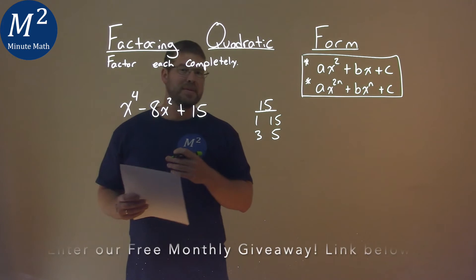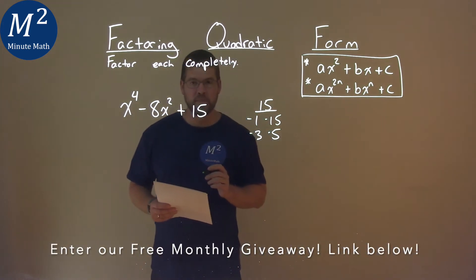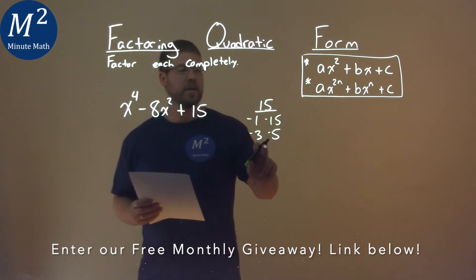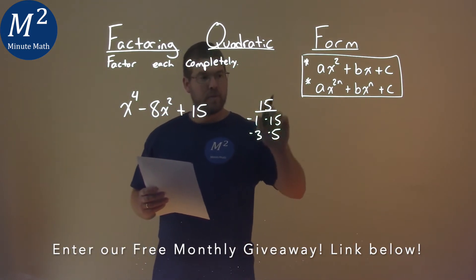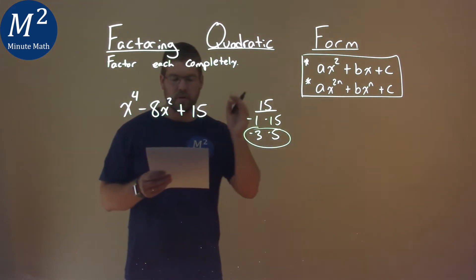But notice that our b value here is a negative 8, meaning that both of these will have to be negative. So since both of them will have to be negative, we say what two numbers are negative, multiply to 15, but add to be negative 8, and that's the negative 3 and the negative 5. That's our clue.